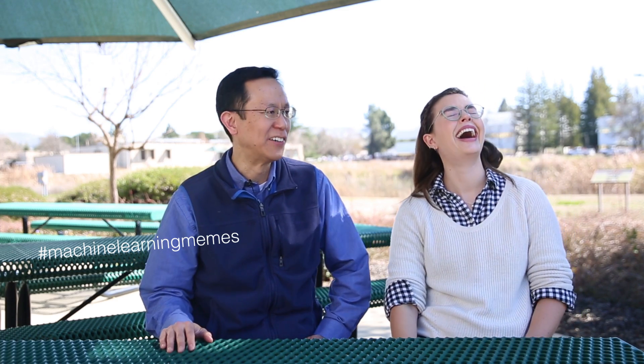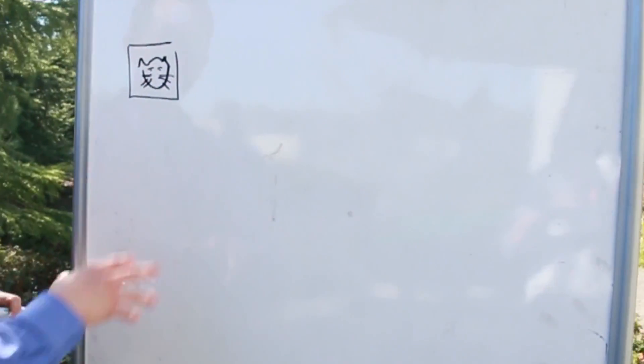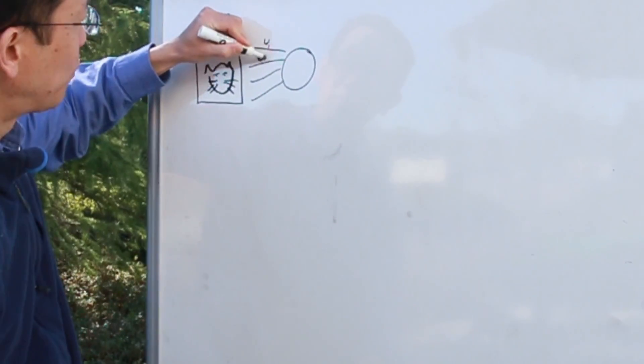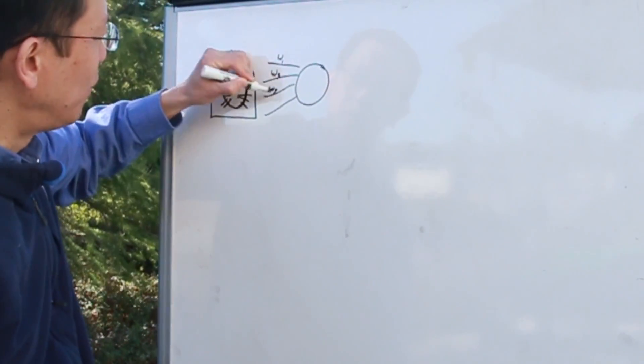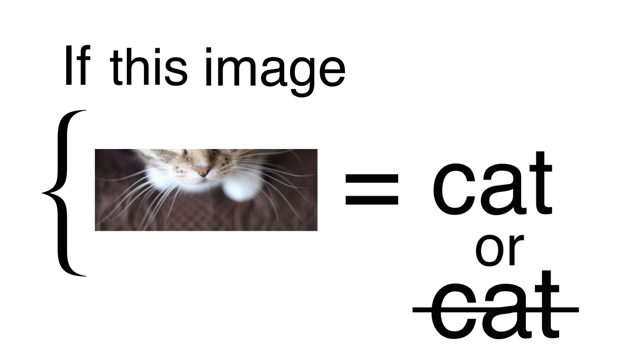Let's say for example that you wanted to detect images of cats — this is a recurring meme throughout the machine learning community. So given a set of images, the challenge is to say whether there's a cat in this image or not. The traditional way of computer programming this would be to come up with a set of if-then-else statements — like if this image has whiskers, then it is a cat, or else it is a non-cat.